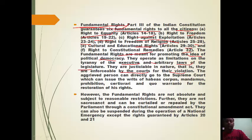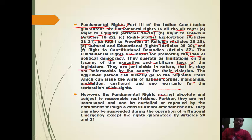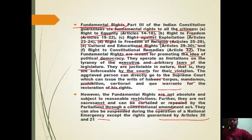An aggrieved person can directly go to the Supreme Court under writs: habeas corpus, mandamus, prohibition, certiorari, and quo warranto. However, fundamental rights are not absolute and are subject to reasonable restrictions. They can be curtailed or repealed by Parliament through a constitutional amendment, and can be suspended during a national emergency, except rights guaranteed under Articles 20 and 21.